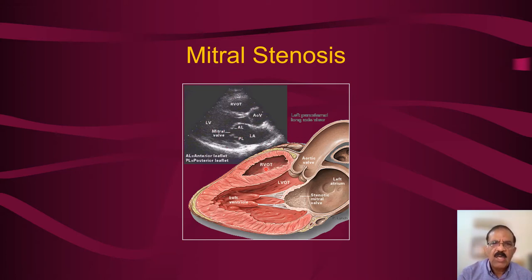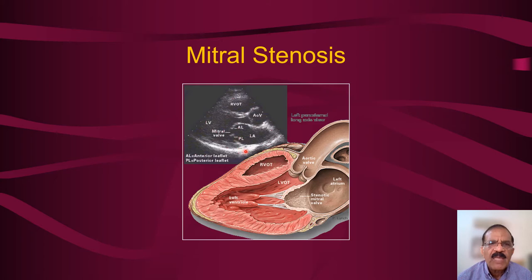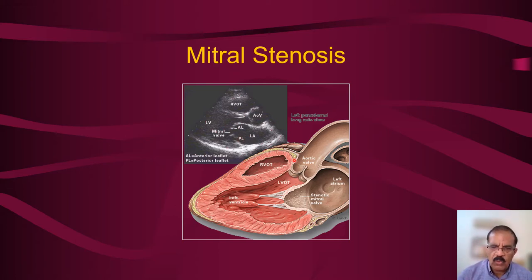This echocardiogram shows that the left atrium is increased in size, and this cusp — bending backward — shows that the commissures are fused. There is a small lumen remaining. This is the aortic valve, this is the left ventricle, and this is the left atrium. This was just a brief orientation; we will discuss this in much more detail so that you have a very good idea of what this condition is.